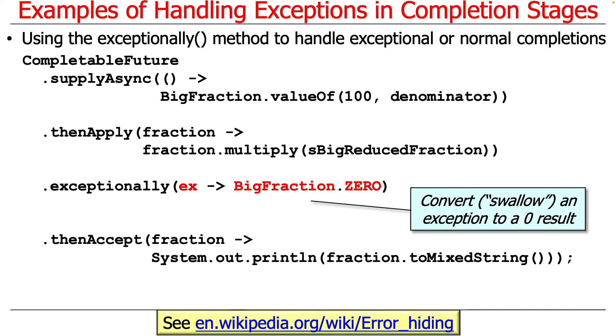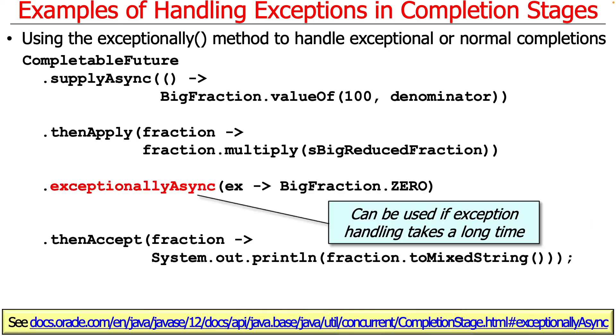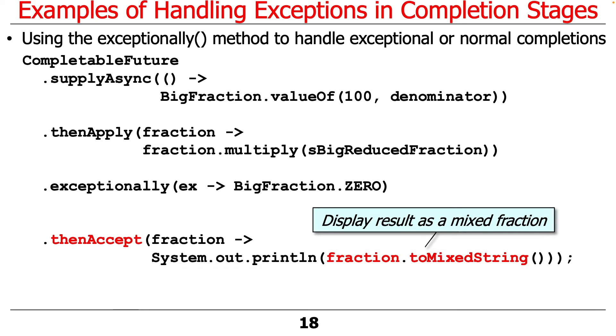Normally you would log something as well, just so you don't just have exceptions disappearing willy-nilly. But in this particular case, we are not worried about that, so it'll fit on one slide, basically. You could also use exceptionallyAsync if the exception handling was to take a long time. Not a very common thing to do, was added in Java 12, probably mostly just for symmetry more than anything else, but it's just there if you need it. And then the last thing we do is we display the results as a mixed fraction, which again will either be zero if an exception occurred, or the multiplied big fraction if it didn't.